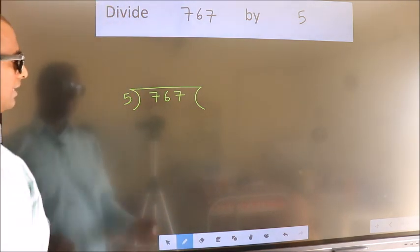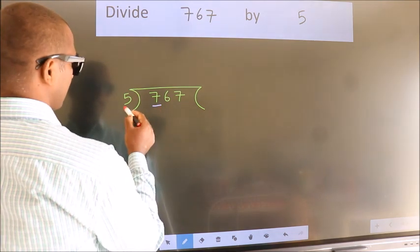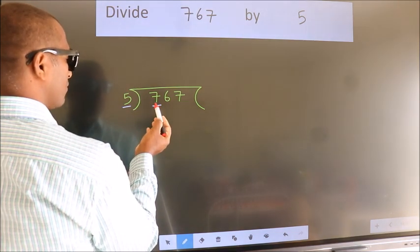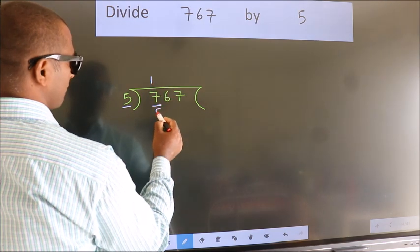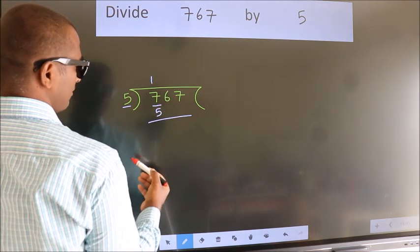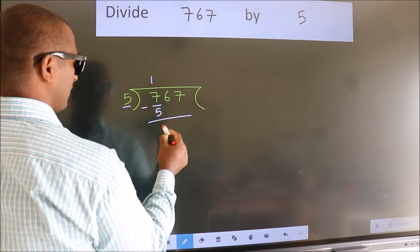Next, here we have 7, here 5. A number close to 7 in 5 table is 5, 1 times 5. Now we should subtract. We get 2.